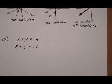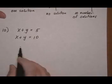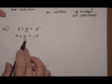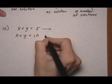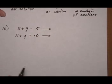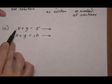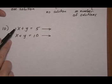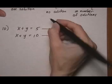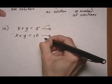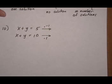So number 10. X plus Y equals 5 and X plus Y equals 10. We want to get either the X or the Y terms to cancel out. So let's just shoot for the X's. If we multiply the top one by minus 1, minus X and plus X will cancel. So let's go ahead and do that, and just multiply the bottom by 1. Keep it the same.